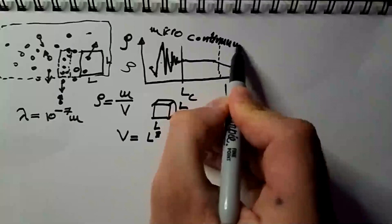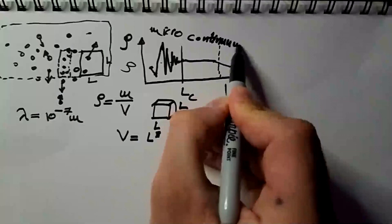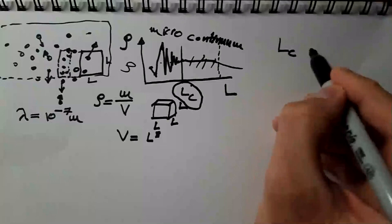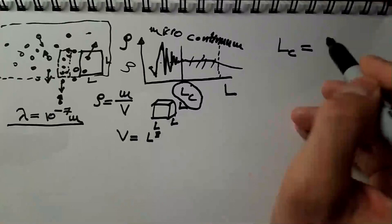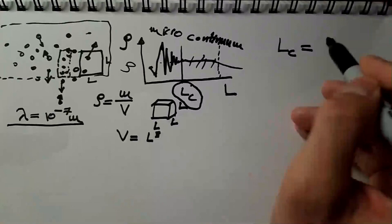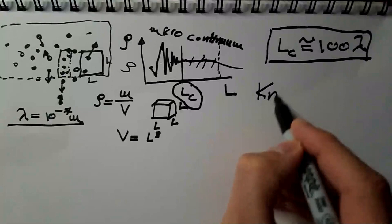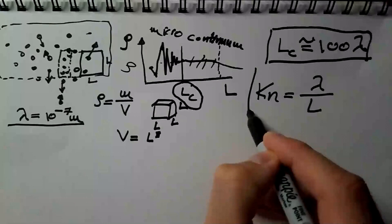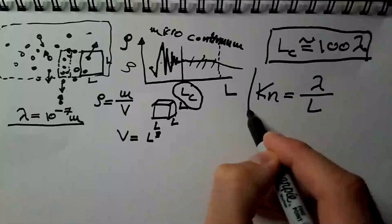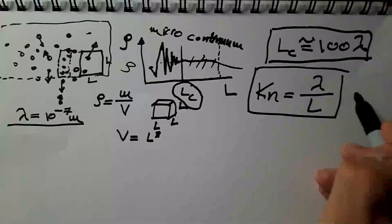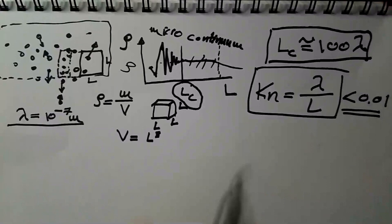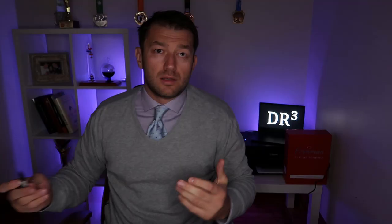Okay, so the logical question to answer now is, how big is this Lc in air? It turns out that this Lc is related to this lambda, which is the mean free path of molecules, and it is around 100 lambda, it turns out. And this is the criterion for air being continuum. This can be expressed in another way. We say KN is lambda over L. And this quantity is known as Knudsen number, named after Danish physicist Martin Knudsen. So, if this number is smaller than 0.01, then we are in the regime of continuum.